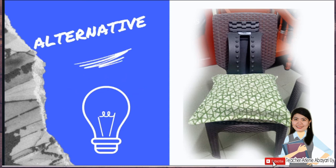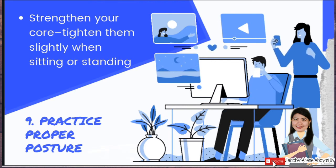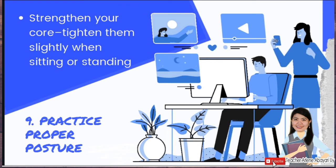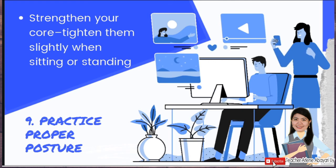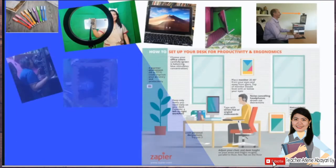Practice proper posture. Take frequent breaks that incorporate moving around and stretching. Strengthen your core — tighten them slightly when sitting or standing to avoid back pain — and get your spine in the best natural shape. Roll your shoulders back and sit up straight and tall. Minsan pagka tayo habang naka-upo, medyo nangangawit ka na — ikot-ikutin lang natin yung shoulder natin, kumembot-kembot tayo kahit naka-upo. Much better kung tatayo ng konti, lakad-lakad ng konti to relax our spine at yung mga muscles natin.